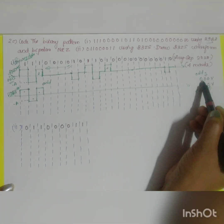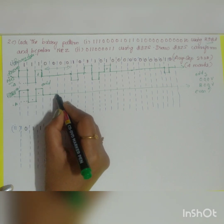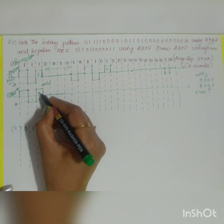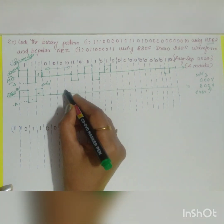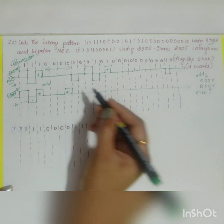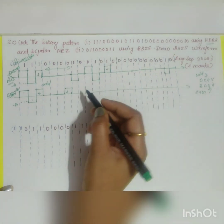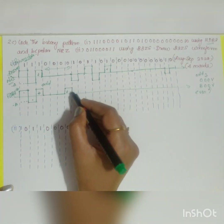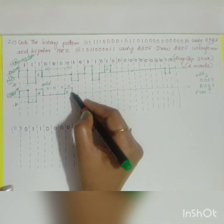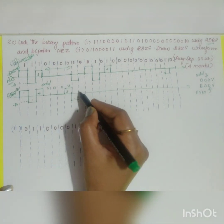Since it is odd, you apply 000V — that is 0, 0, 0, and then violation. What is meant by violation? If the previous one is positive, here also it will be positive, violating the rule of bipolar. Normally in bipolar the next one should take negative, but violation breaks this rule. So it becomes 000V. The next bit follows normal bipolar — here it is positive, so the next is negative.